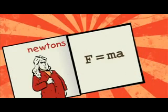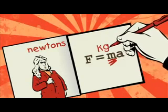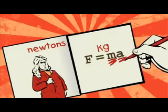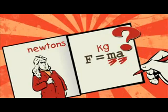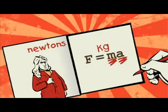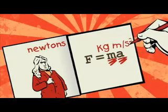F is measured in units called Newtons, named after Isaac Newton, who came up with the equation in the first place. Mass is measured in kilograms, and acceleration is measured in metres per second squared.